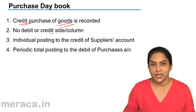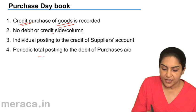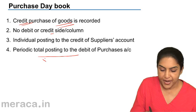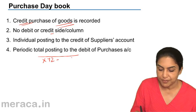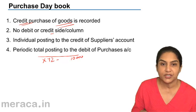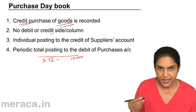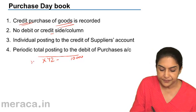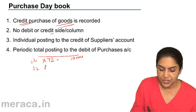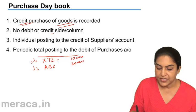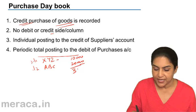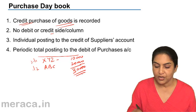How is the posting done? What happens in a purchase day book is we just write — for example, XYZ purchased, maybe the amount is worth 10,000. There'd be other details and a date. Similarly, on another date, we purchase something from ABC, maybe worth 20,000. So let us say there were just two credit purchases, giving us a total of 30,000.